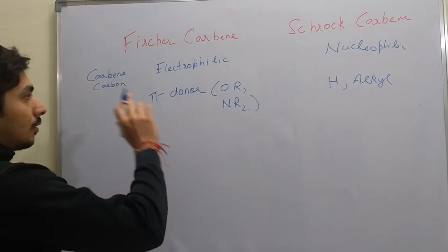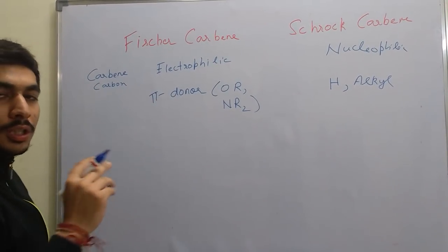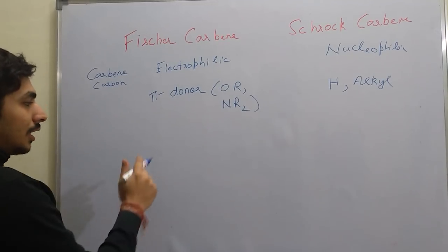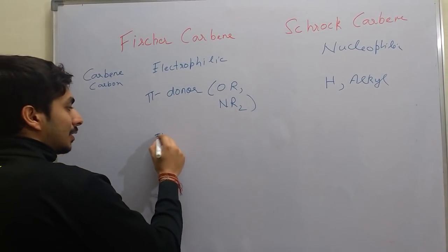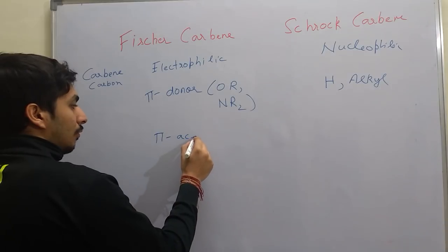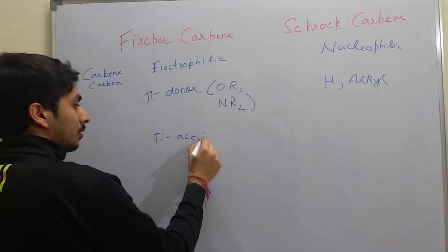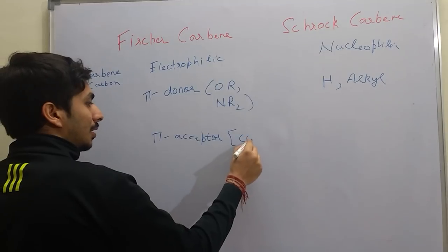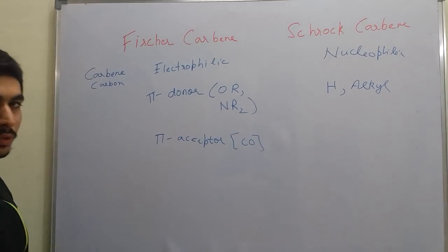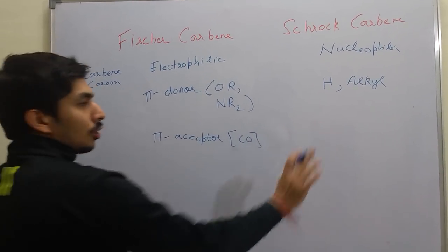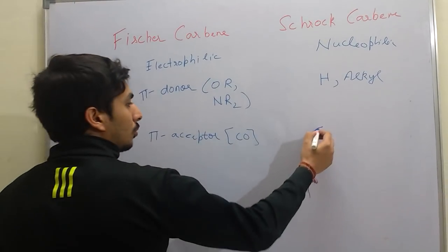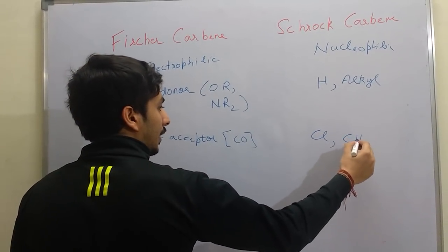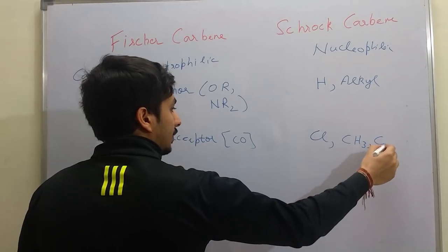Now, regarding the nature of the ligand attached to the metal: for Fischer Carbenes, the ligands are generally pi-acceptor ligands. The best example of a pi-acceptor ligand is CO. For Schrock Carbenes, the ligands are non-pi-acceptor — it could be chlorine, methyl, or cyclopentadienyl (Cp).